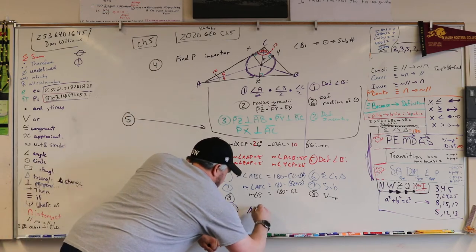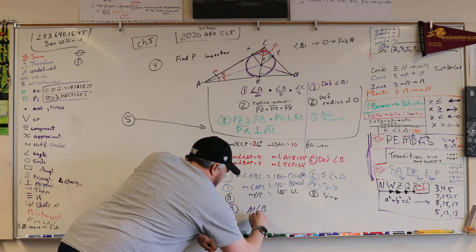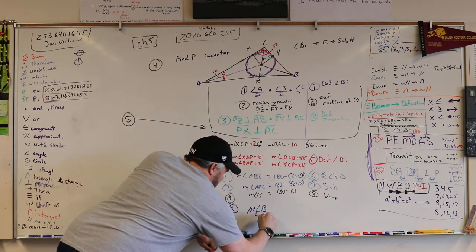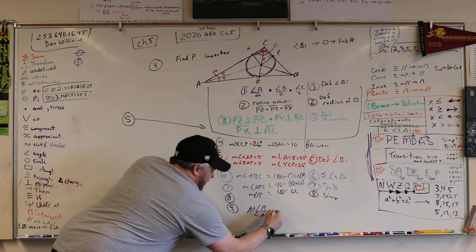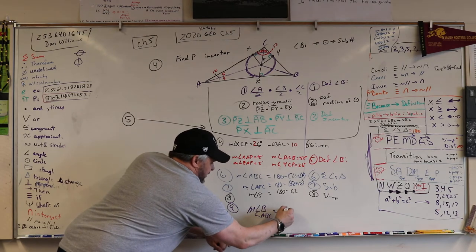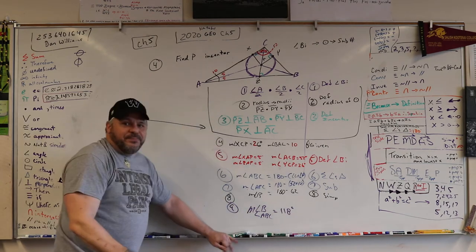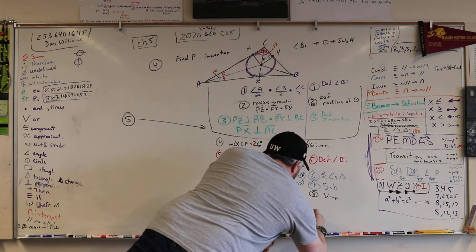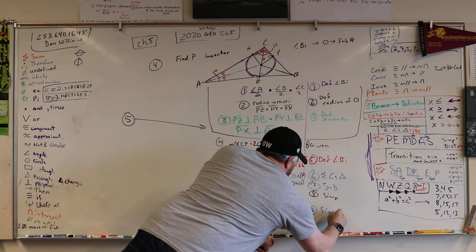So angle B or angle ABC, however you want to say it, is equal to 118 degrees. And that's again simplified.